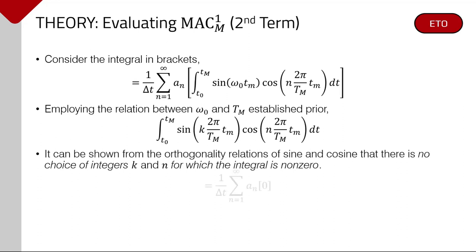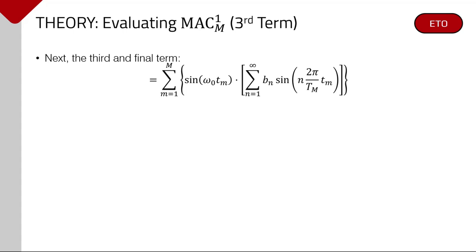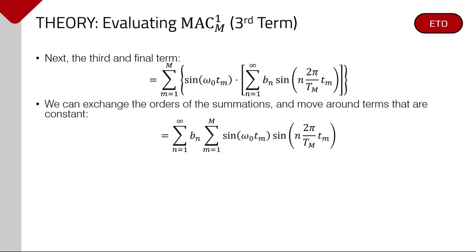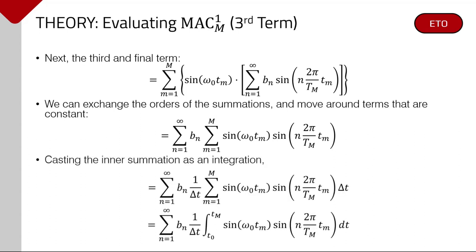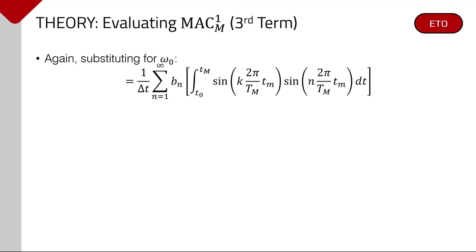Let's examine the term in the square brackets now. The drive frequency can be rewritten in terms of the integer k and the sampling interval t sub m, applying the constraint described prior. With the integral in this form, we can make an important observation. Due to the orthogonality relations of the sine and cosine functions, there is no choice of integers k and n for which the integral is non-zero. Thus, the bracketed quantity is always zero. We have now shown that, regardless of what values the a sub n Fourier coefficients take, the net contribution of these terms to the MAC operator is zero. Note that this is only true because of our choice of integration interval. It does not hold for an arbitrary span.